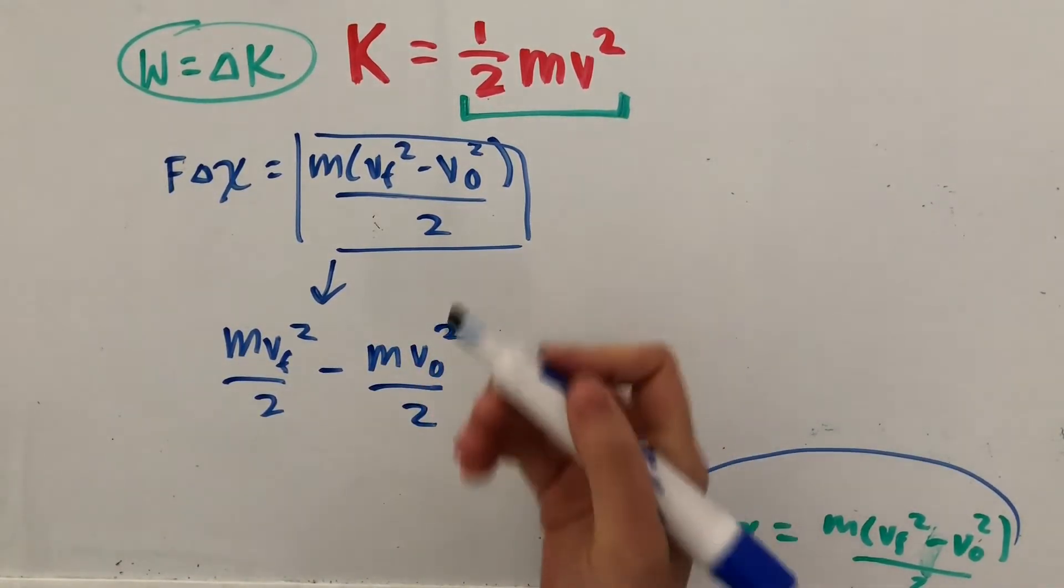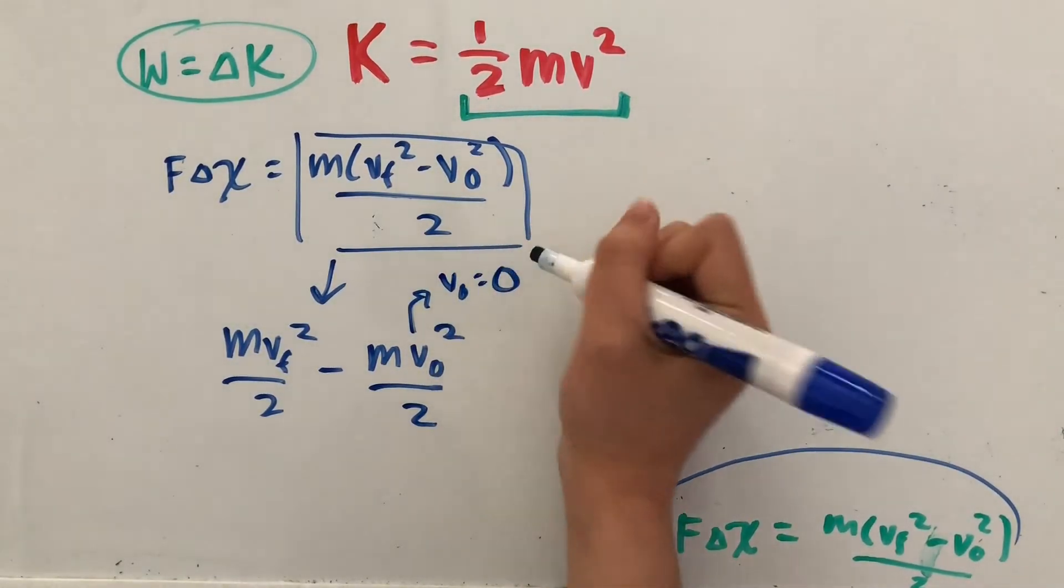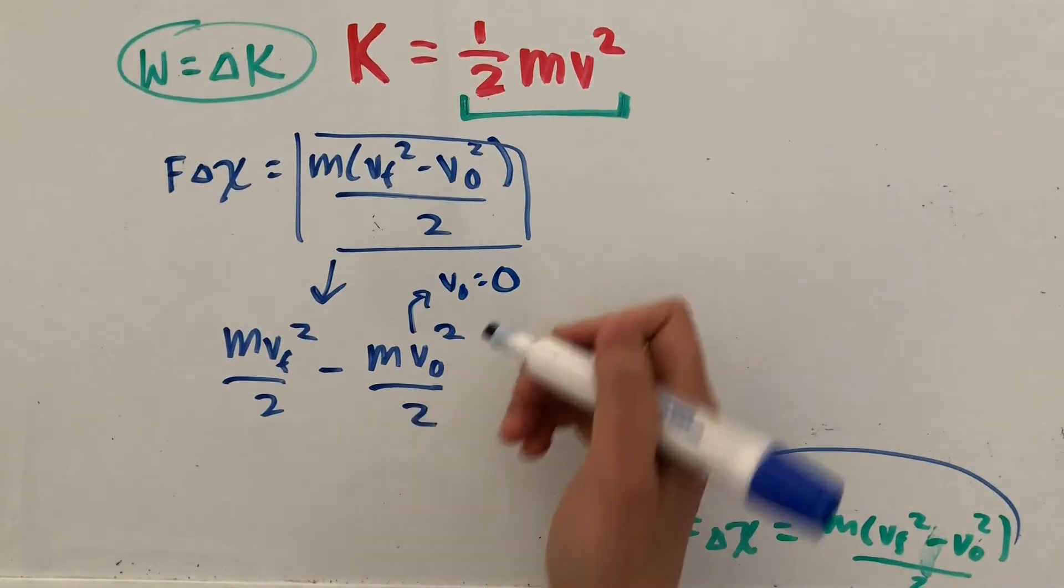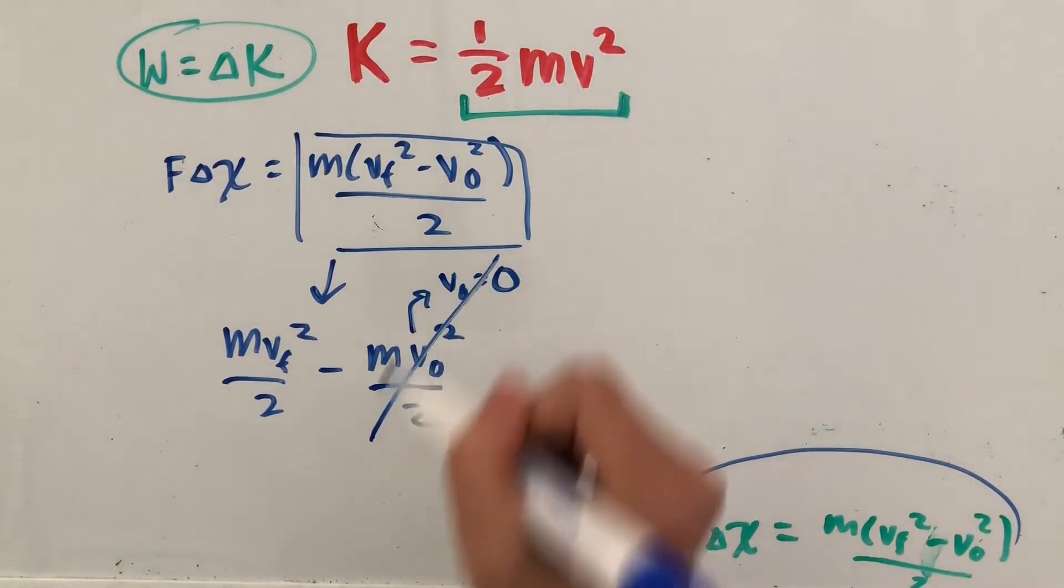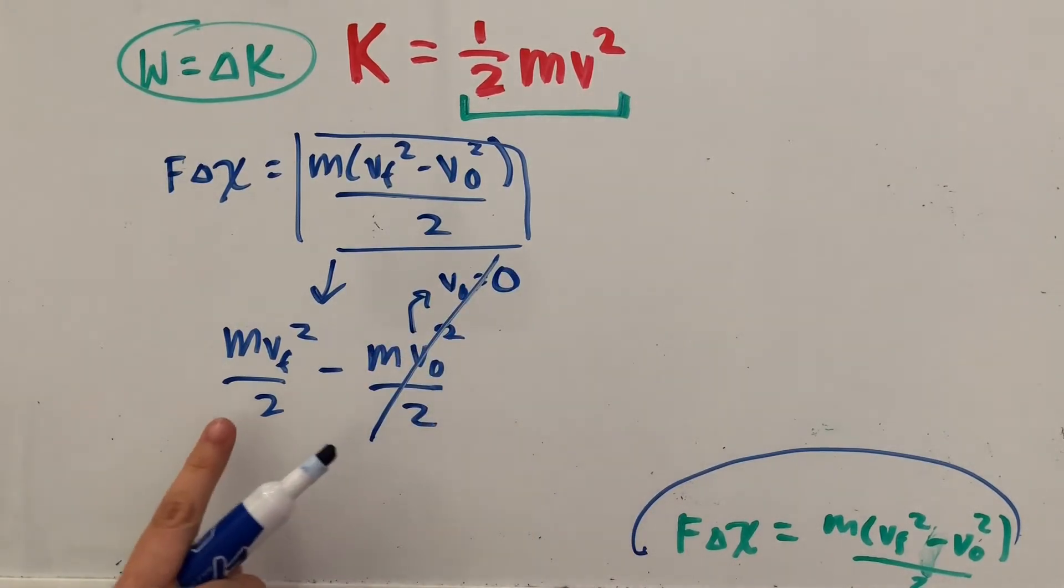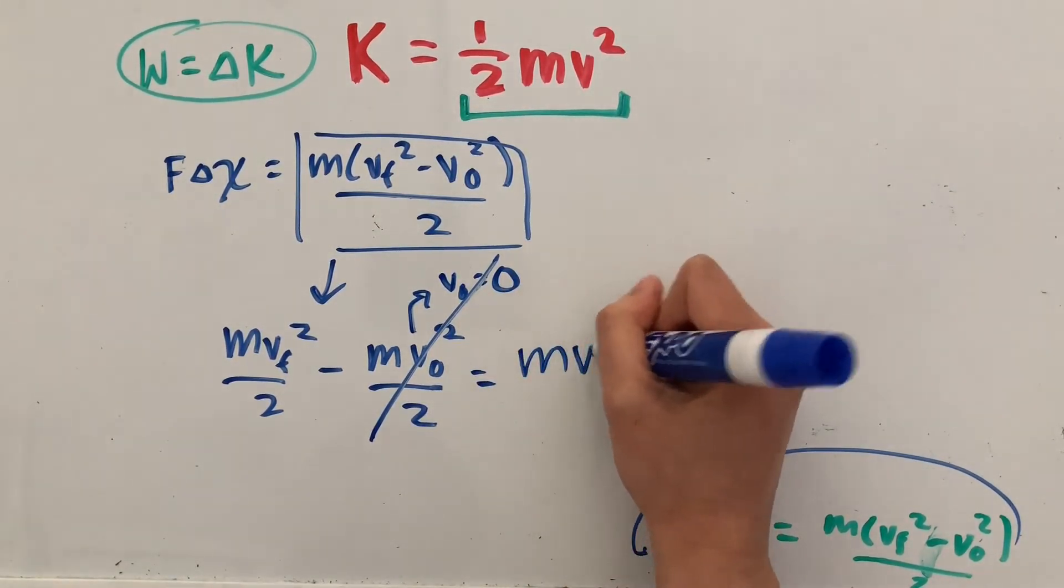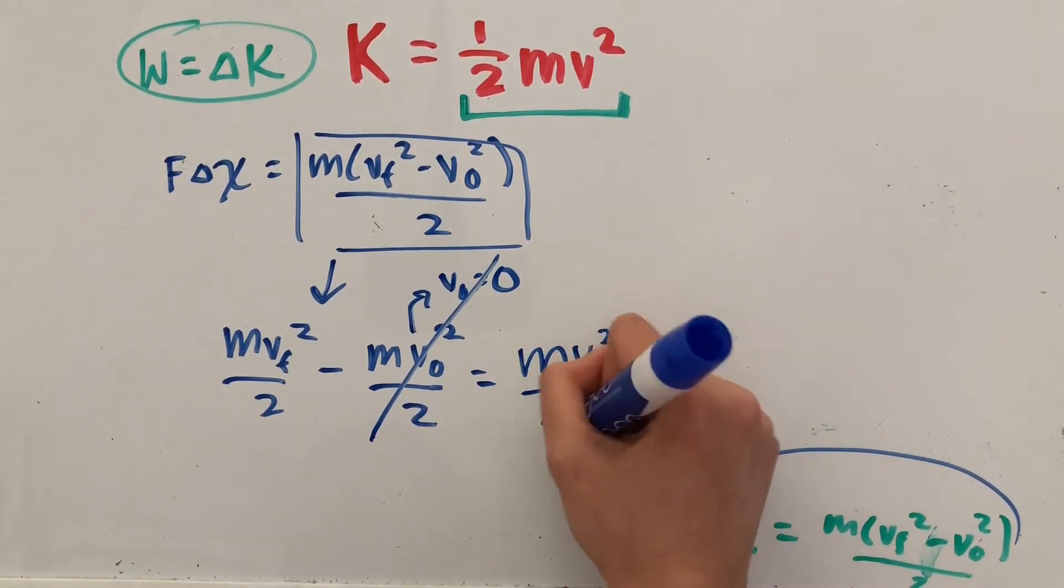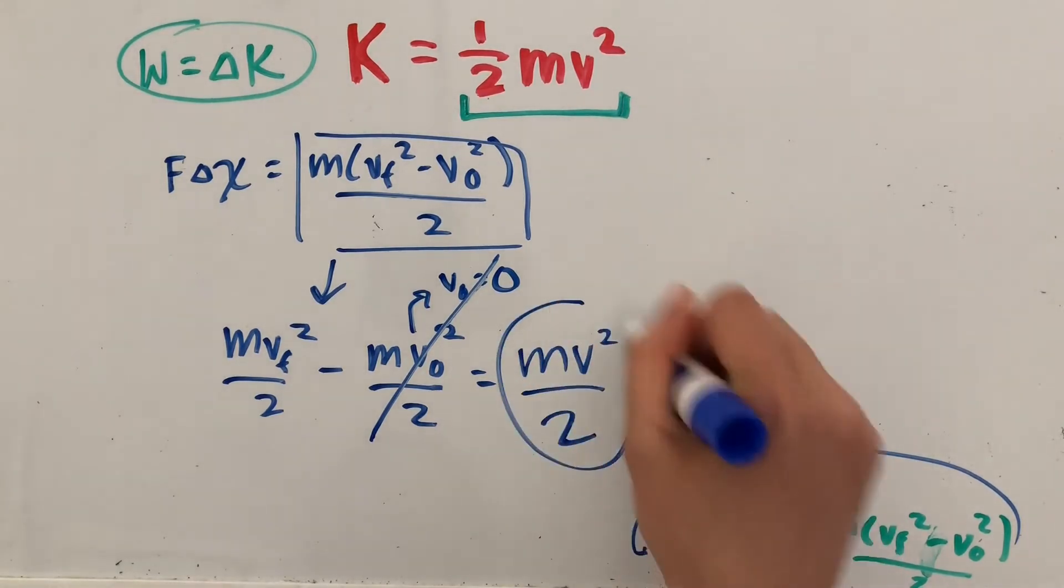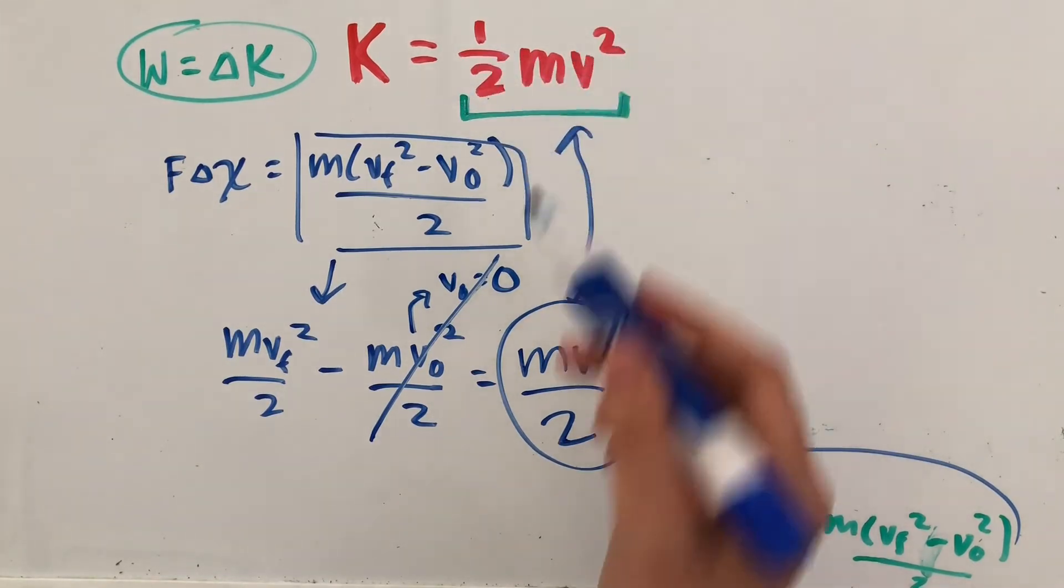And usually we just equate the initial velocity to 0 because an object at rest is going to have 0 velocity. So this entire term becomes 0, and so that's going to be mv squared over 2 minus 0, which is the same thing as mv squared over 2. And as you can see, this looks exactly like our 1 half mv squared that we had up here.